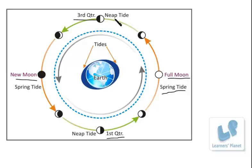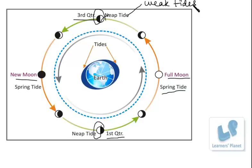Neap tides occur on the first quarter and the third quarter of the moon phase. During the moon's quarter phases, the Sun and Moon are at right angles, causing the bulges to cancel each other out. The result is a smaller difference between high and low tides, which is why they are termed neap tides — they are especially weak tides. Neap tides occur when the gravitational forces of the Moon and the Sun are perpendicular to one another with respect to the Earth. So neap tides occur during quarter moons and spring tides occur during the full moon and the new moon.